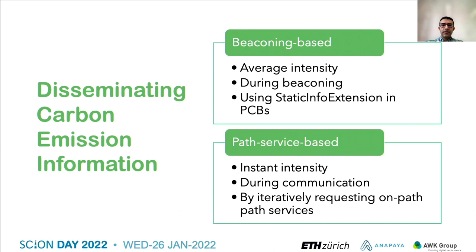We design two mechanisms to disseminate information about the carbon intensity of interdomain paths: a beaconing-based mechanism and a path service-based mechanism. The beaconing-based mechanism is designed to disseminate the average carbon intensity of interdomain paths during beaconing. In this mechanism, the beacon service of an AS encodes the average carbon intensity of intra-domain paths between its border router pairs into the path construction beacons or PCBs, and propagates them to its neighboring ASs.